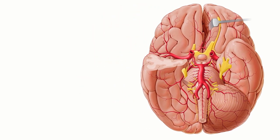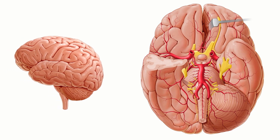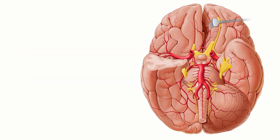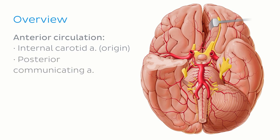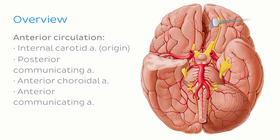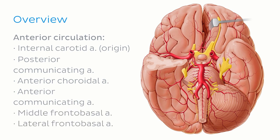As we discuss the arteries of the brain, we'll be discussing them as seen from the basal view, which is basically the bottom or the underside of the brain. We'll break down the arteries that supply the brain into two circulations according to which part of the brain these arteries supply, namely the arteries of the anterior circulation, which supply the anterior part of the brain, and these include the internal carotid artery, the posterior communicating artery, the anterior choroidal artery, the anterior communicating artery, the middle frontobasal artery, and the lateral frontobasal artery.